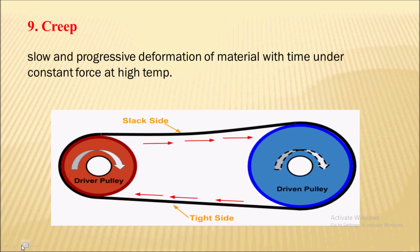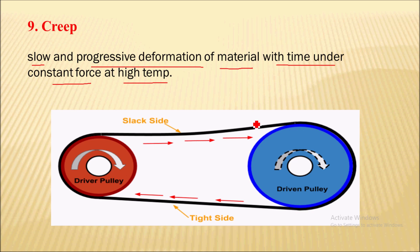Next is creep, which is a very important phenomenon. Creep is the slow and progressive deformation of a material with time under constant force at high temperature. In this image you can see a belt passing over a pulley. There is a frictional force between the belt and pulley due to which the belt is getting elongated and contracted. This elongation and contraction of the belt is nothing but the creep phenomenon.